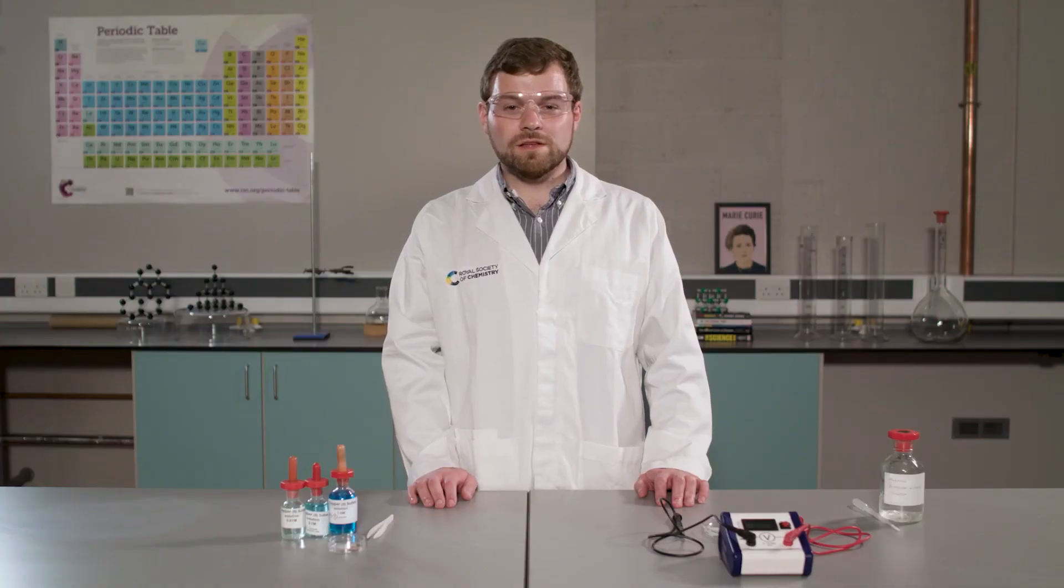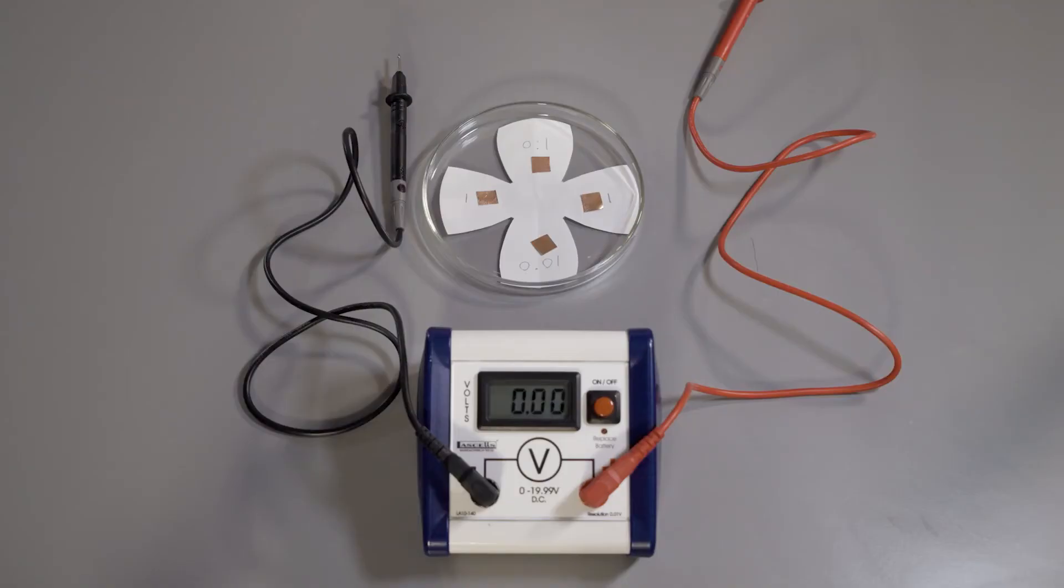In a further experiment, we can investigate how the concentration of solution affects the potential difference of a half cell. Again, I have cut a piece of filter paper to form four petals, this time with a piece of copper in each section. And this time I am going to add copper sulfate solutions of different concentrations.